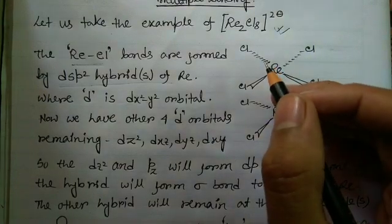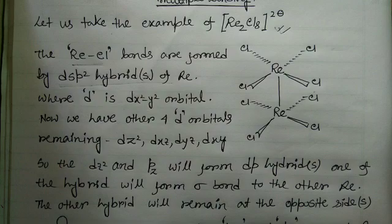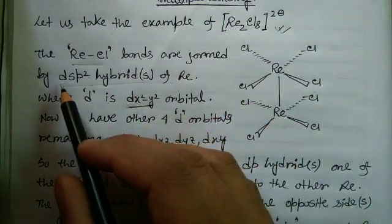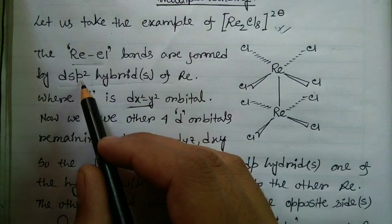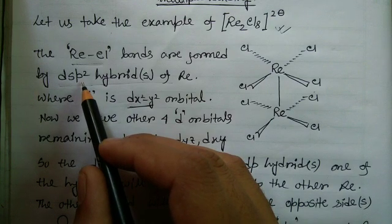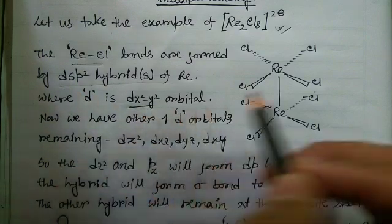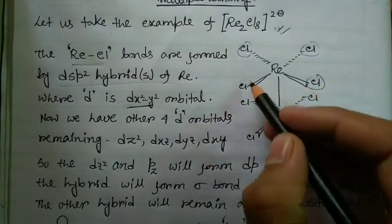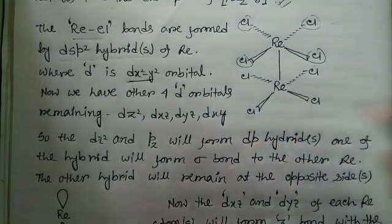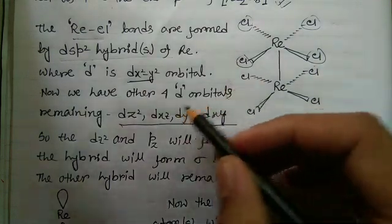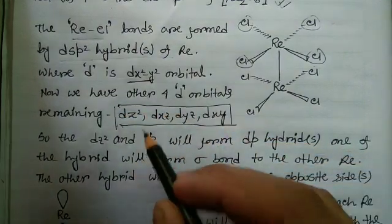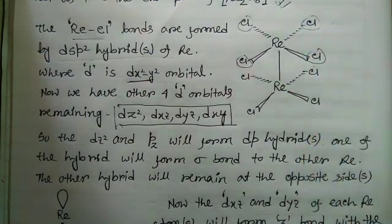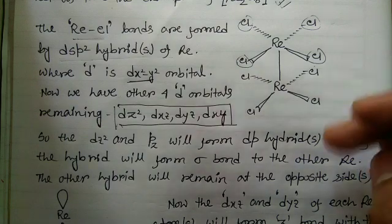The dx²-y² orbital along the x and y axes, together with the px, py, s, and dx²-y² orbitals, form four dsp² hybrid orbitals used to form the rhenium-chlorine bonds. After using all these orbitals, the remaining orbitals on each rhenium — dz², dxz, dyz, and dxy — will be utilized to form the rhenium-rhenium bond.